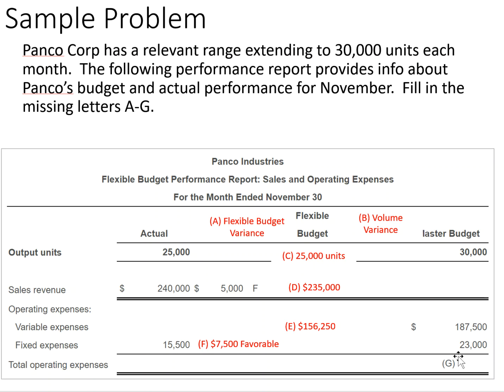Finally, for G, total operating expenses under the master budget, we add the two together: 187,500 plus 23,000 gives us 210,500.